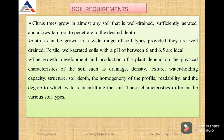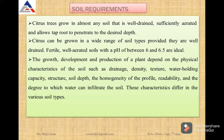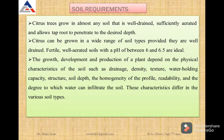Regarding soil requirements, citrus trees can be grown in almost any type of soil that is well-drained, sufficiently irrigated, and allows the tap root to penetrate to the desired depth. The ideal pH for citrus is 6 to 6.5. Growth, development, and production of plants depend upon the physical characteristics of the soil such as its drainage system, density, texture, water holding capacity, structure, and soil depth.